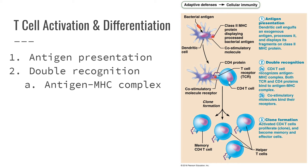In this diagram, the blue cell is our T cell and the rectangle is the T cell receptor. The purple cell is our dendritic cell, and the purple rectangle is the class 2 MHC protein holding a red antigen — in this case, a non-self bacterial antigen. The T cell is binding to the MHC protein and to the antigen. That is one half of the double recognition. There's also a protein on the surface of the T cell that aids in binding the antigen-MHC complex and helps hold them together.